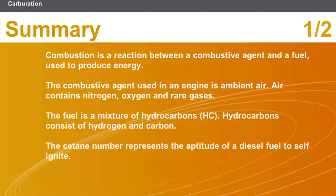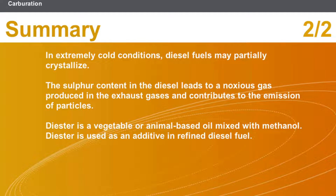The cetane number represents the aptitude of a diesel fuel to self-ignite. In extremely cold conditions, diesel fuels may partially crystallize. The sulfur content in the diesel leads to a noxious gas produced in the exhaust gases and contributes to the emission of particles. Diester is a vegetable or animal-based oil mixed with methanol, used as an additive in refined diesel fuel.